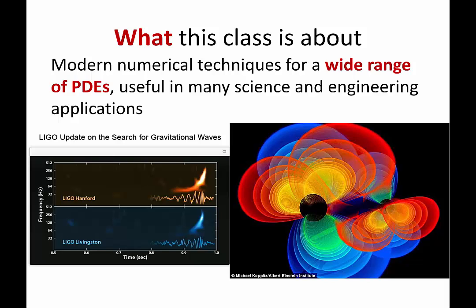If you look at the left-hand side of this slide, you're going to see the kind of signal detected on the two observatories across the country. And the puzzle is, of course, how did the physicists know that these kinds of signals correspond to the merger of two black holes? Einstein derived the equations almost a century ago, and it turns out these equations are remarkably difficult to solve analytically, except for very restricted, very simplified cases.